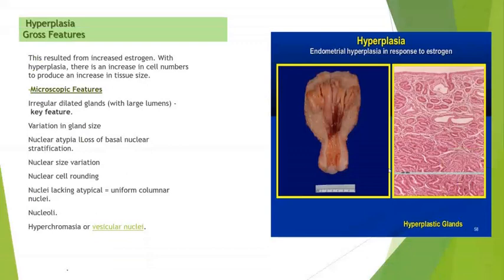The gross features of hyperplasia: this is a case of endometrial hyperplasia. You can see there is an increase in tissue size resulting from an increase in estrogen. Microscopically, there are irregular dilated glands with larger lumens — this is the key feature. Variation in gland size, nuclear atypia, nuclear size variation, nuclear rounding, and nuclei with uniform columnar appearance and hyperchromasia.